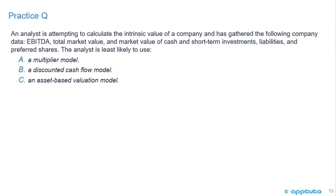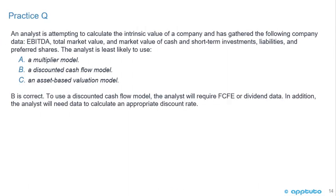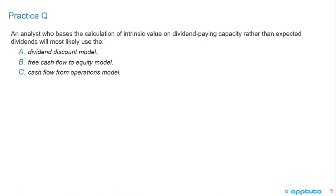An analyst is attempting to calculate the intrinsic value of a company and has gathered: EBITDA, total market value, market value of cash and short-term investments, liabilities, and preferred shares. The analyst is least likely to use: A) a multiplier model, B) a discounted cash flow model, or C) an asset-based valuation model. B is correct. To use a discounted cash flow model, the analyst would require free cash flow to equity or dividend data, neither of which is mentioned, nor is there data to calculate a discount rate.